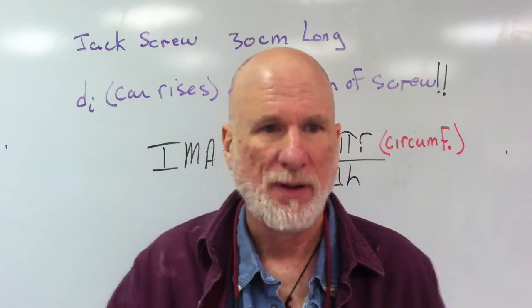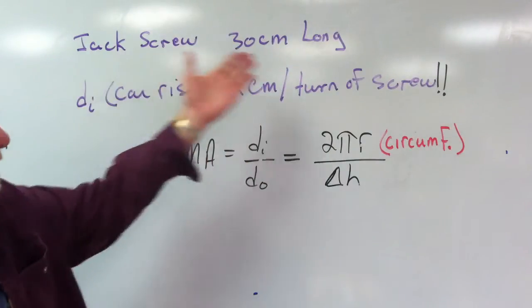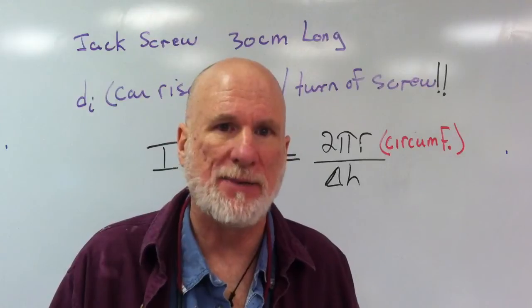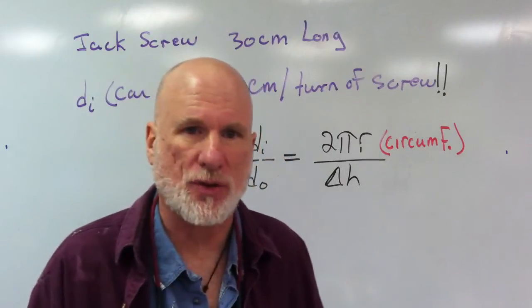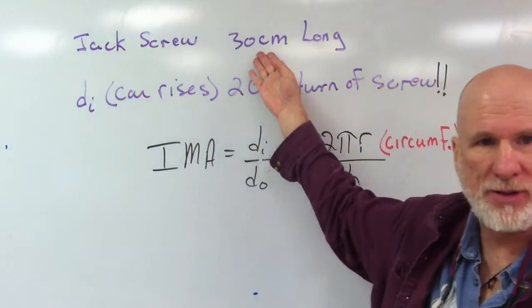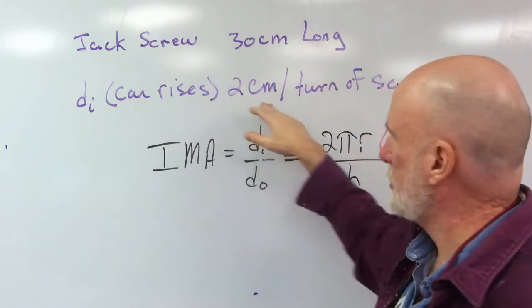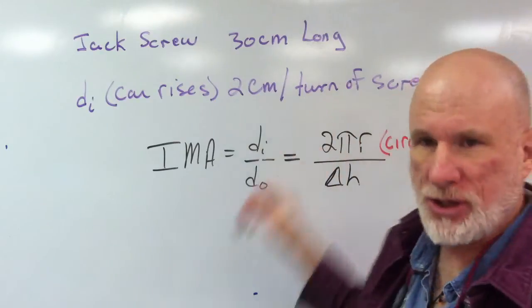Easy? So now, given this information, I want you to determine what is the ideal mechanical advantage of this jack screw. The arm is 30 centimeters long. It's going to raise it 2 centimeters per turn of the screw.